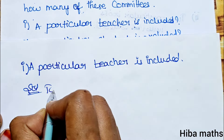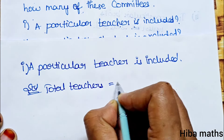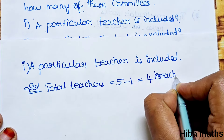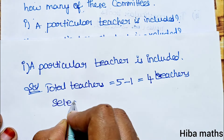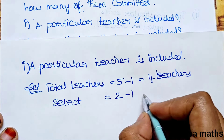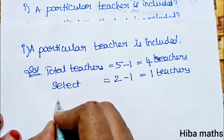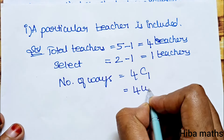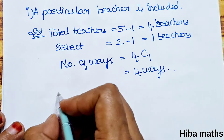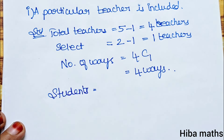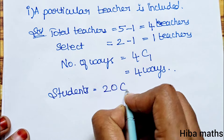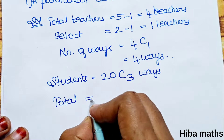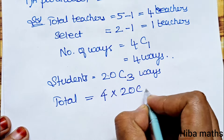In the solution for the next sub-part: total teachers are 5. If one teacher is already selected, then total remaining is 5 minus 1 equals 4 teachers. We select 2 teachers, so with 1 already selected, we choose 1 more from 4. Number of ways: 4C1 = 4 ways. For students: total is 20, we select 3, so 20C3 ways.